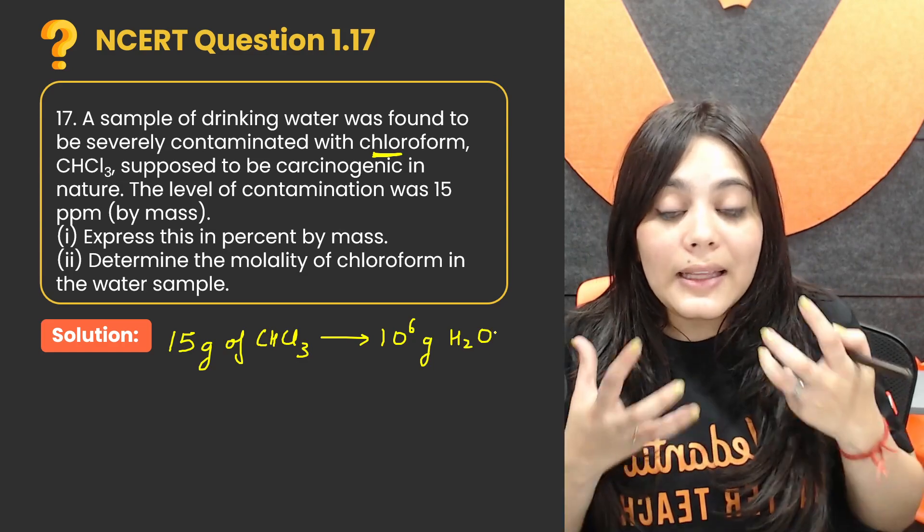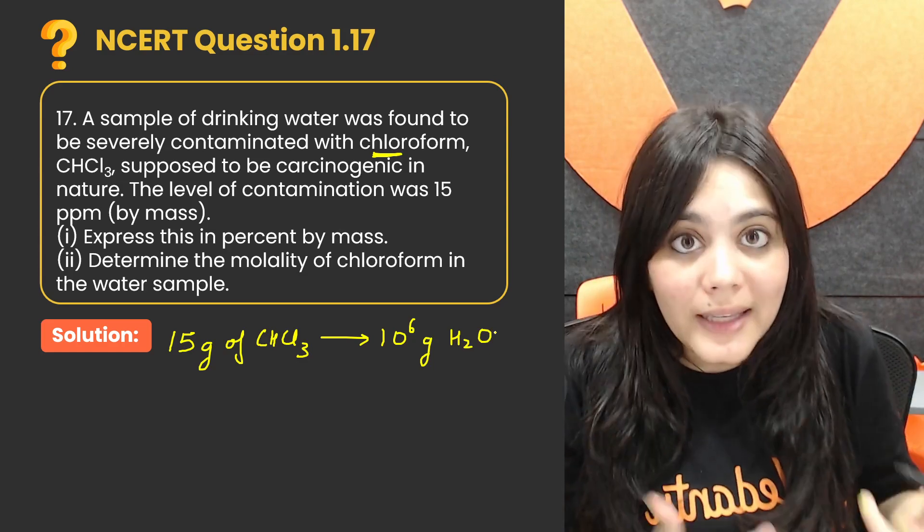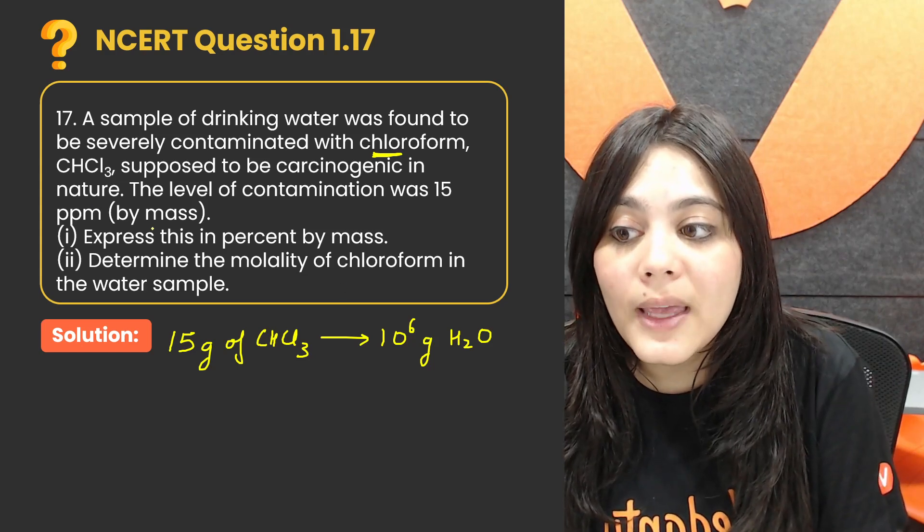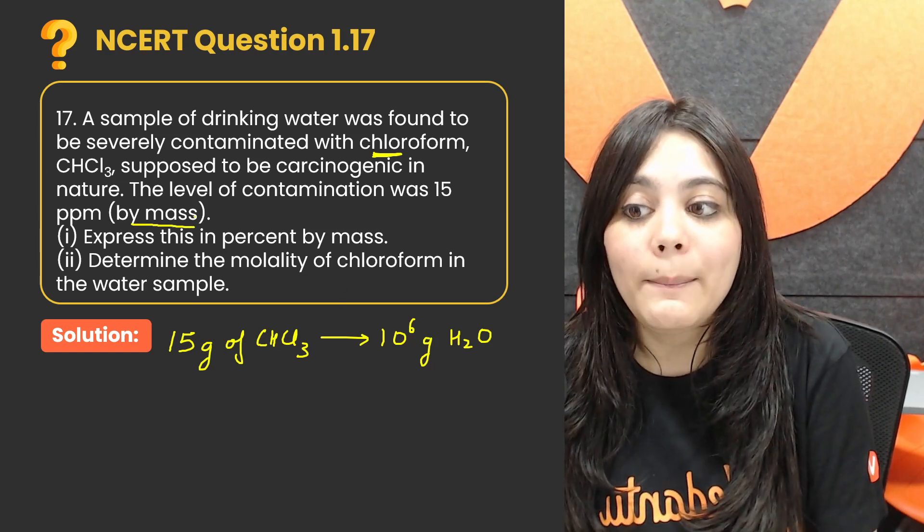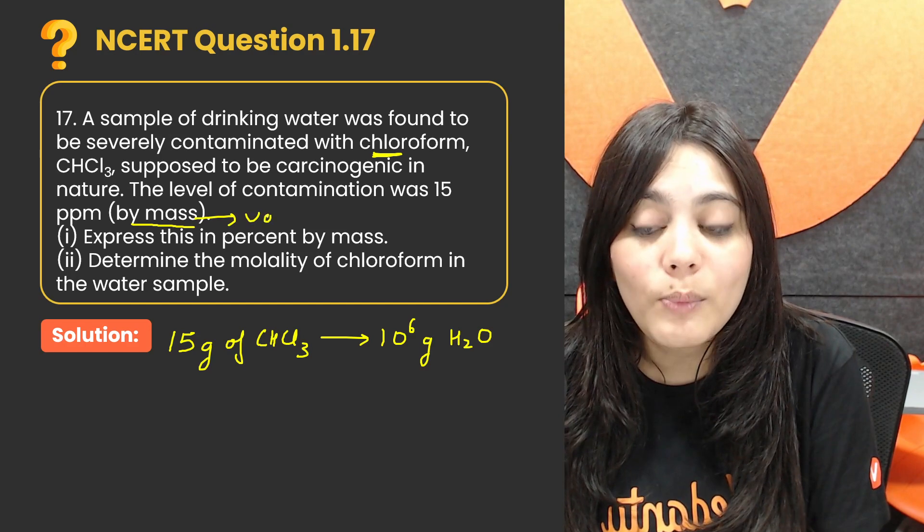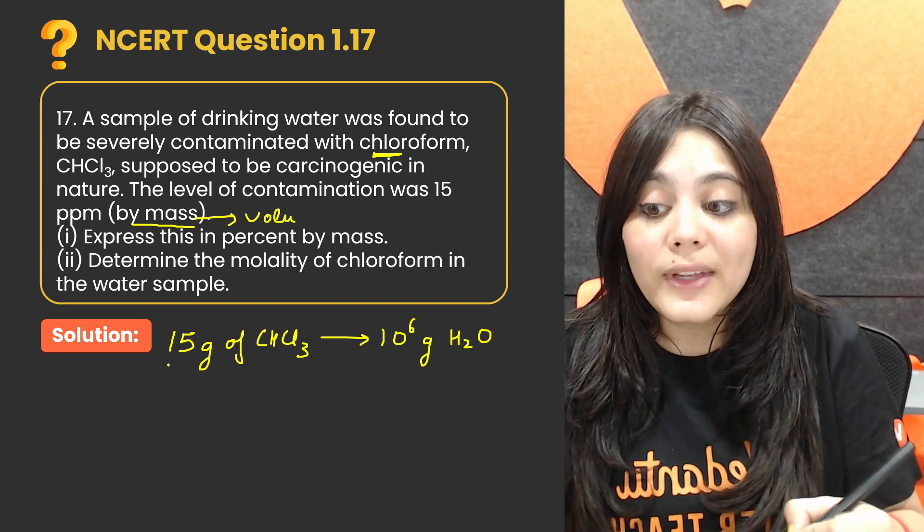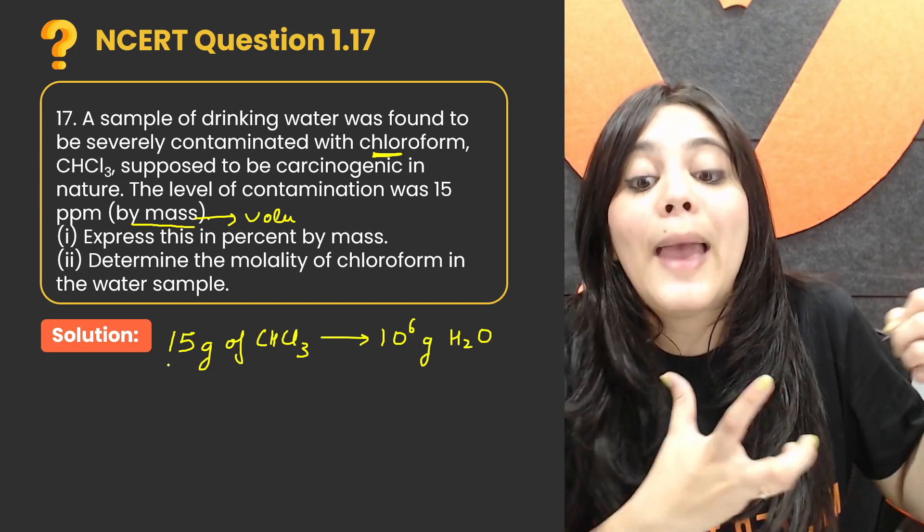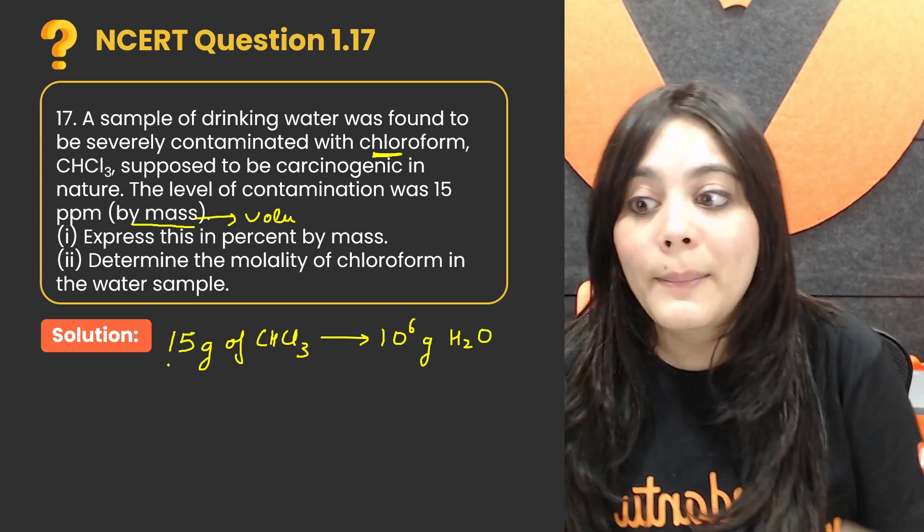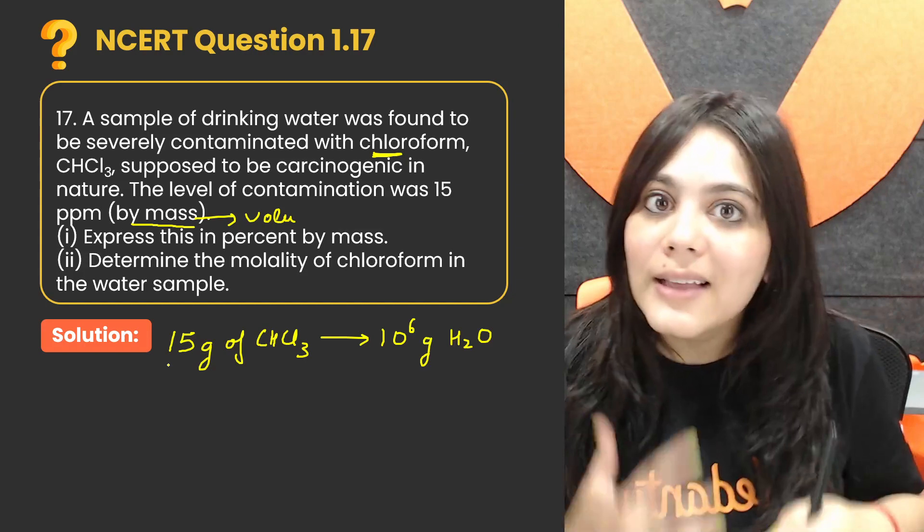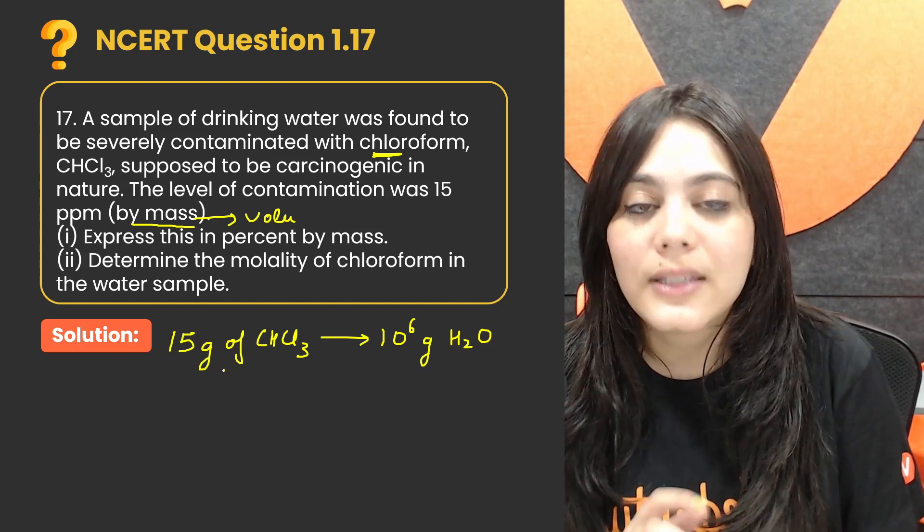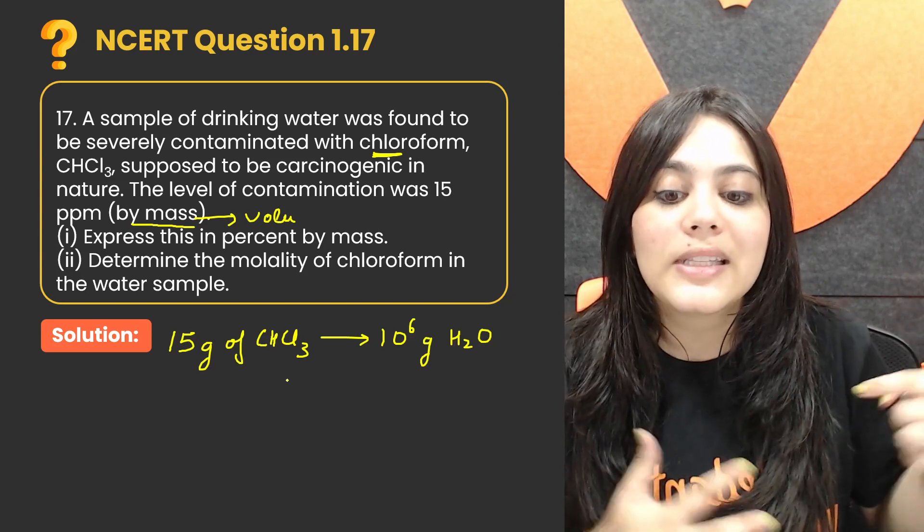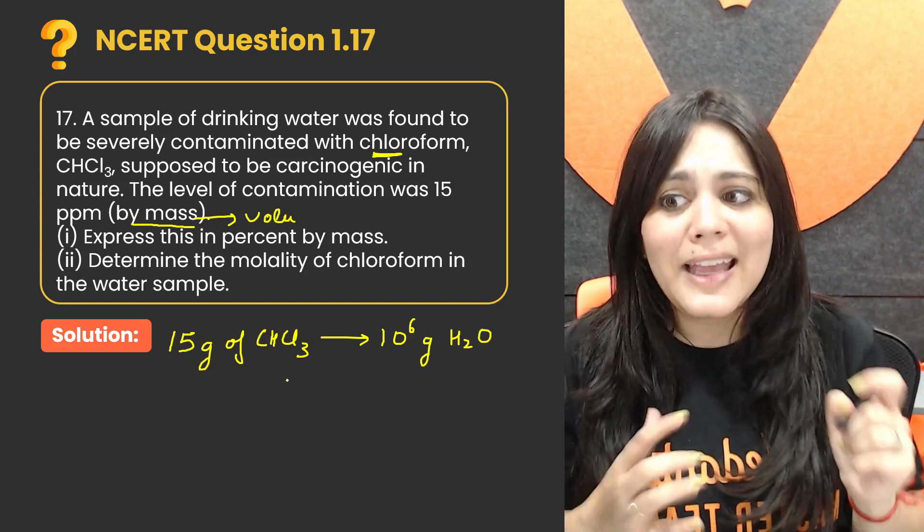If you have 10 to the power of 6 grams of water, then there is 15 grams of chloroform. Because it is mass, we are using mass, which is grams. So 15 grams of chloroform is in 10 to the power of 6 grams of water. This is the first information here.